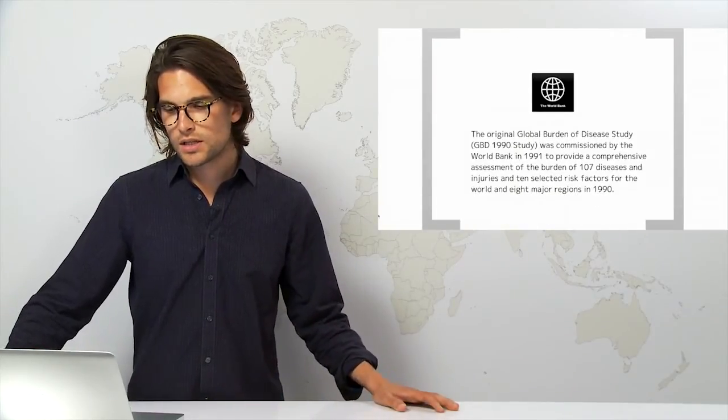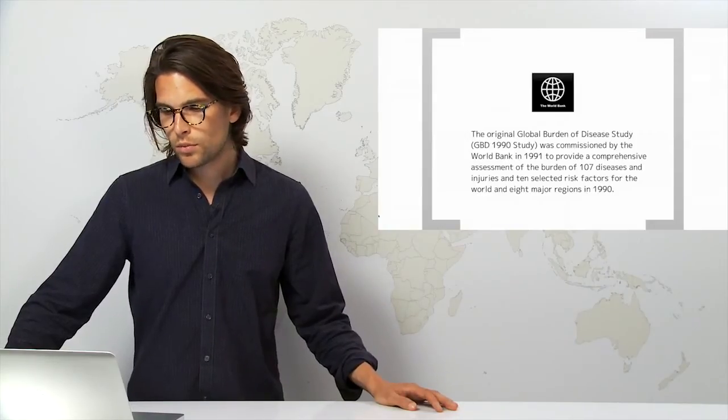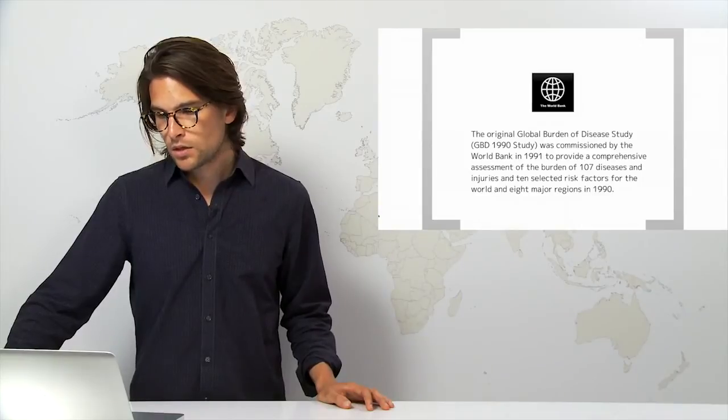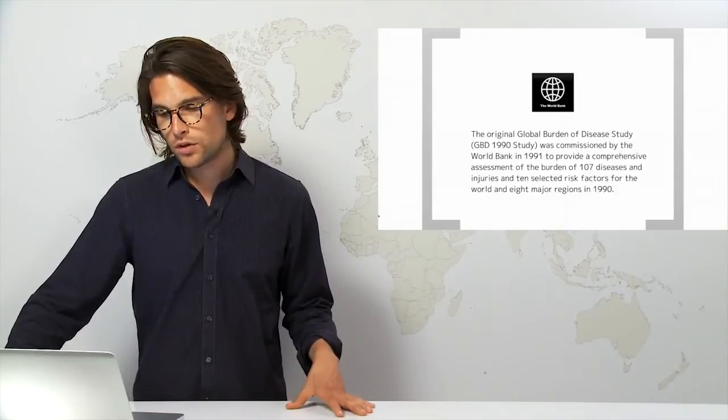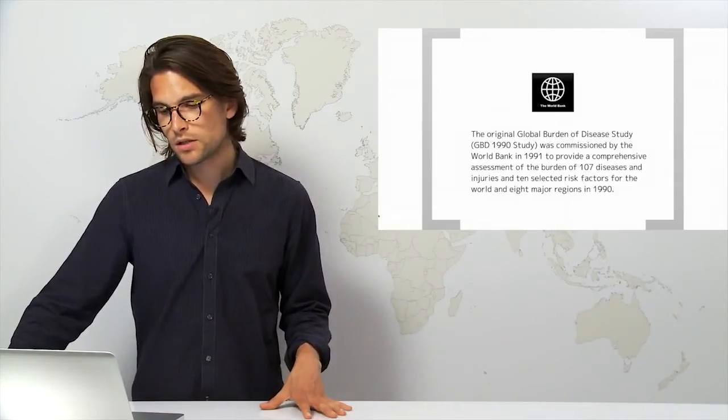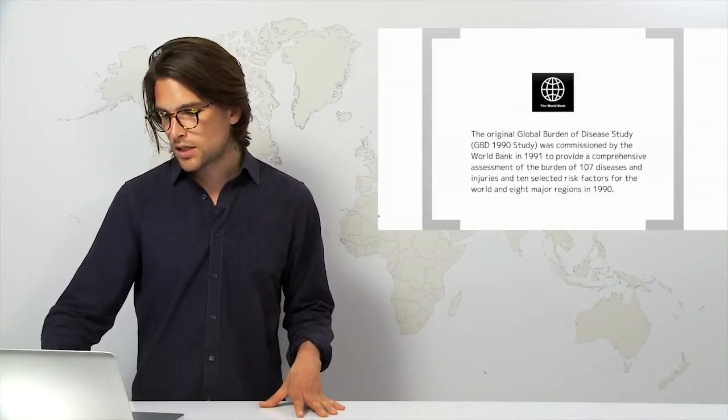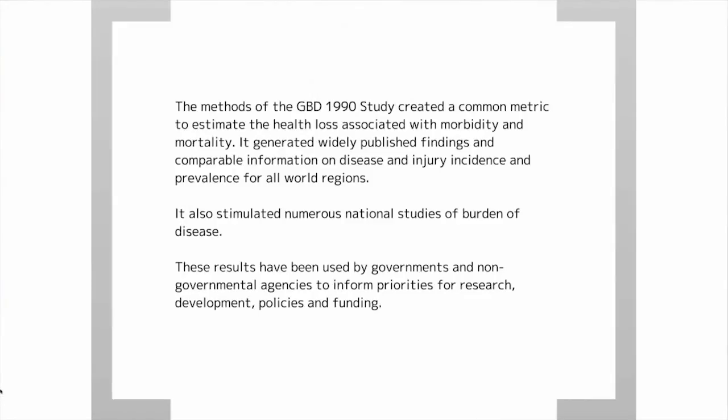The original global burden of disease study, or GBD 1990 study, was commissioned by the World Bank in 1991 to provide a comprehensive assessment of the burden of 107 diseases and injuries and 10 selected risk factors for the world and eight major regions within the world in 1990. The methods of the GBD 1990 study created a common metric to estimate the health loss associated with morbidity and mortality globally.